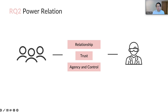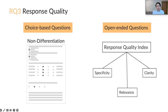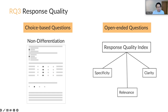The power relation between the participant and researcher is measured by perceived relationship, trust, and agency and control. Those three measures depict important aspects of power relation and help us understand how Rumi affects the power dynamic. We measure response quality by looking at the participant's responses to both choice-based questions and open-ended questions in the dummy study. For choice-based questions, we measure non-differentiation, a survey-satisficing behavior where respondents give nearly identical responses to all items. For open-ended questions, we created a response quality index based on our prior studies, measuring the overall quality across three dimensions: specificity, relevance, and clarity.